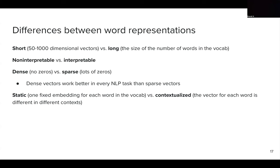We also briefly discussed static versus contextualized. Static means we have one fixed embedding for each word in the vocabulary. Later, when we talk about pre-trained language models and BERT, we will talk about contextualized word representations — for every occurrence of a word in each different sentence, we will have a different representation. For example, if 'basin' appears in 1,000 sentences, we will have 1,000 different representations, differing because the sentences are different. Therefore we talk about contextualized word representations.